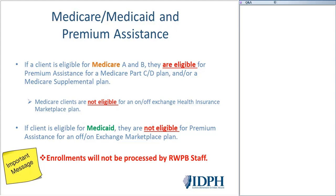If a client is eligible for Medicaid, just as with Medicare, they are not eligible for premium assistance for on- or off-Marketplace plans. In Illinois, which has had expanded Medicaid from the beginning, eligibility is at 138% of the federal poverty level. When an individual becomes eligible for expanded Medicaid, they become ineligible for the Marketplace and therefore ineligible for premium assistance. Individuals who submit Marketplace plans but are eligible for Medicare or Medicaid will not have their premium assistance processed by Ryan White, as it is not the payer of last resort in those circumstances.